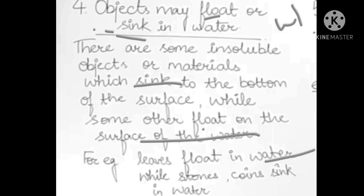Leaves float in water. Coins, stones, and marbles sink because their weight is greater. The leaves are lighter in weight, which is why they stay on the water surface. The stone is heavier in weight, so it sinks. I hope you understand what happens with float and sink.